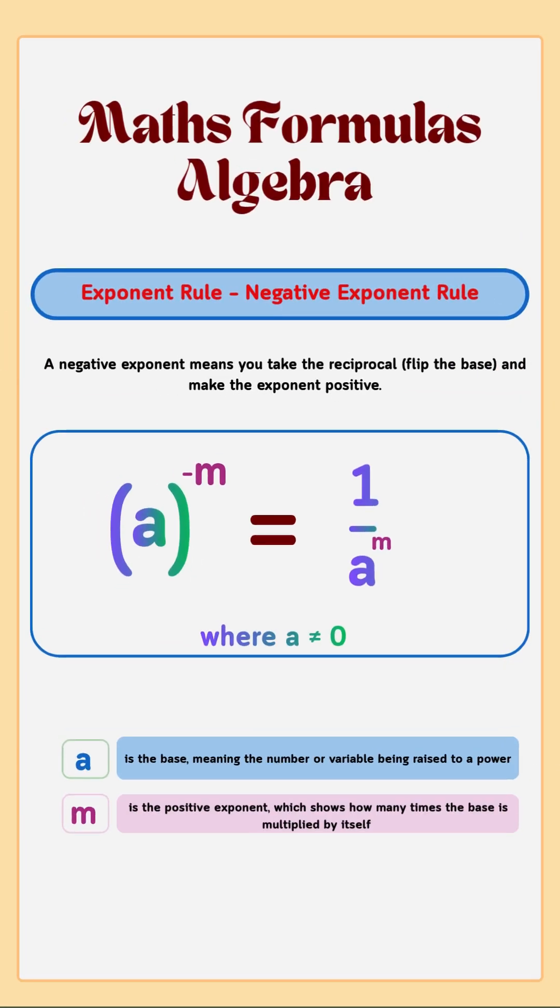Negative Exponent Rule: A negative exponent means take the reciprocal of the base and make the exponent positive.